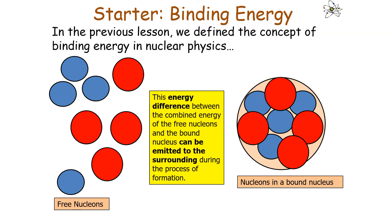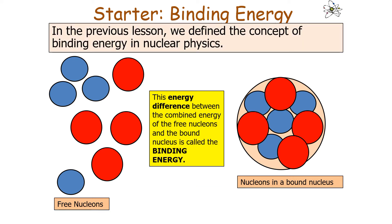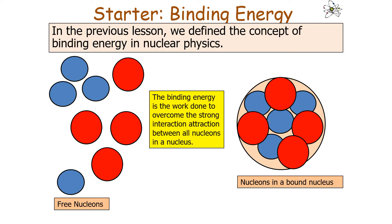The energy difference between the combined energy of the free nucleons and the bound nucleus can be emitted to the surroundings during the process of formation. This energy difference is called the binding energy — the work done to overcome the strong interaction attraction between all the nucleons in the nucleus, and the energy needed to separate all of the nucleons in a nucleus into separate nucleons.